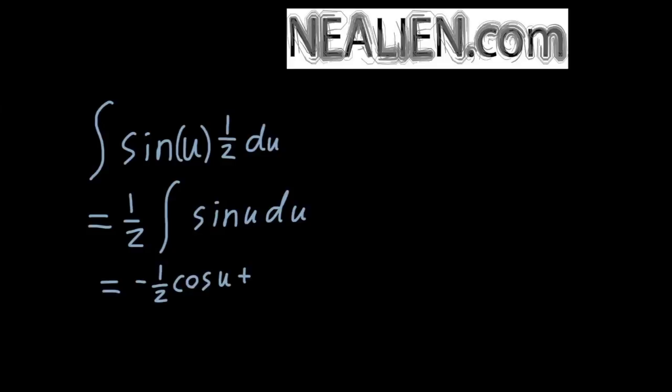The integral or the antiderivative of sine of u is going to be minus cosine of u. Because when you take the derivative of cosine of x, you get minus sine x. So therefore we want a negative sign to get to a positive result. So now we have the answer in terms of u — we've got minus 1/2 cosine of u plus C. And we're going to substitute back in because the original variable is x. So minus 1/2 cosine 2x plus C. That's the answer.